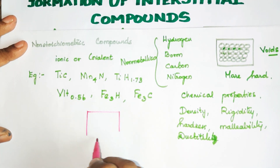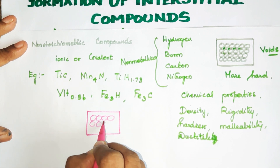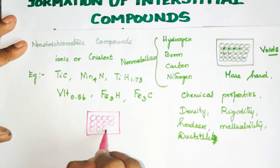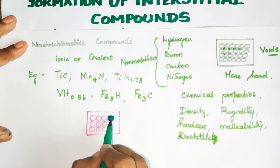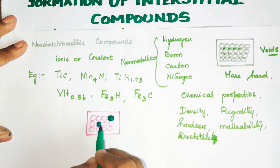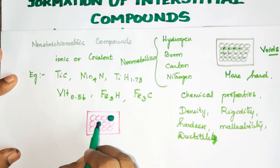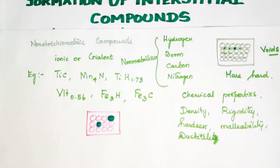In alloys, metal atoms are replaced by other metal atoms. But in interstitial compounds, simple small atoms fit into the gaps of the metal crystal lattice — that is the key difference between alloys and interstitial compounds.